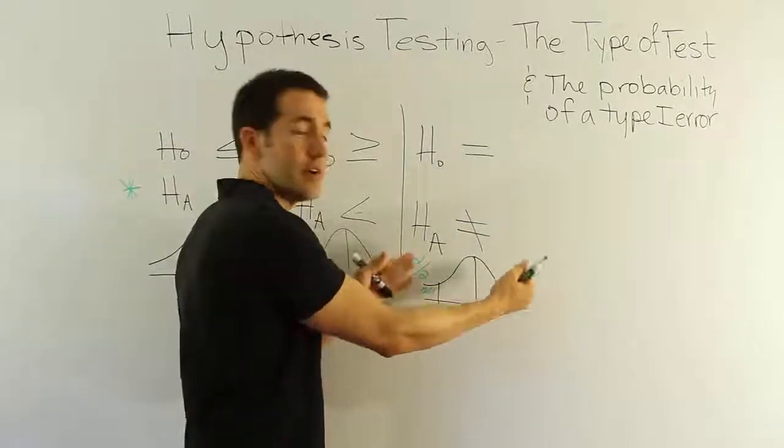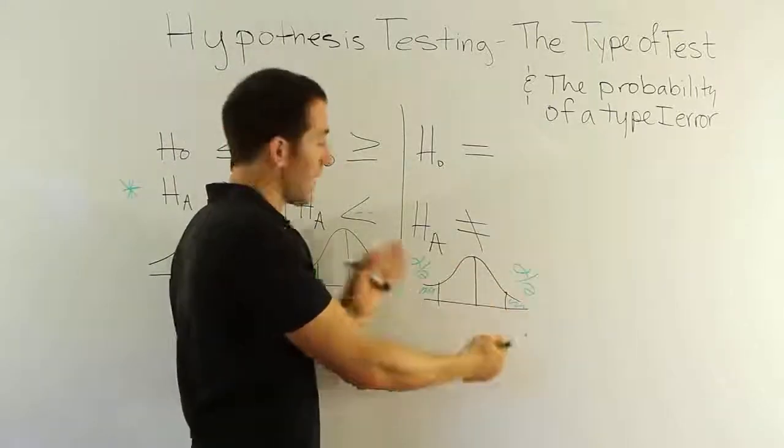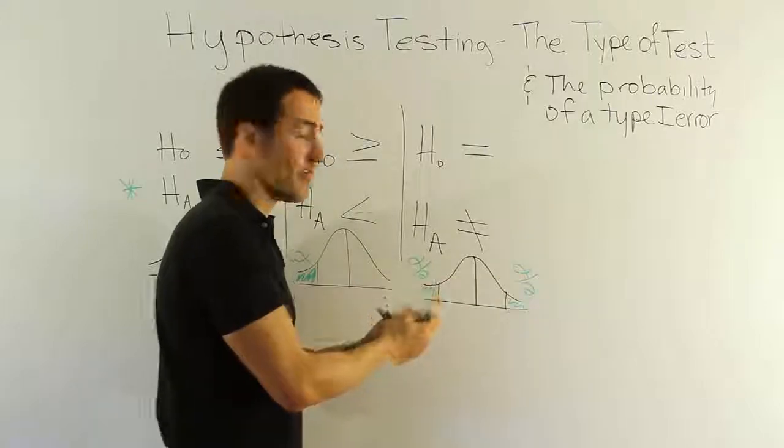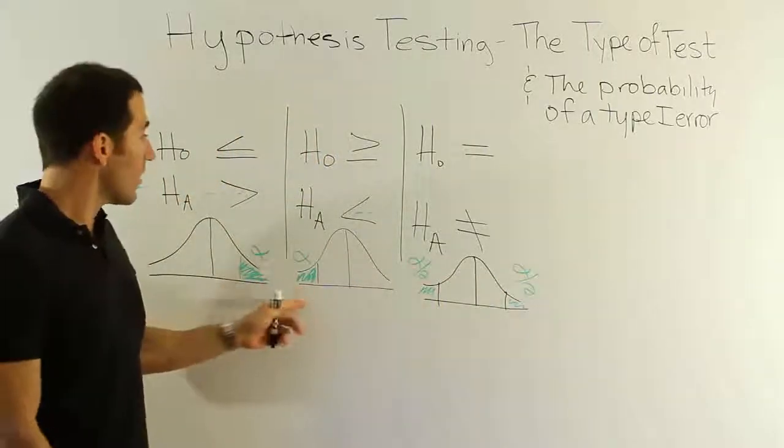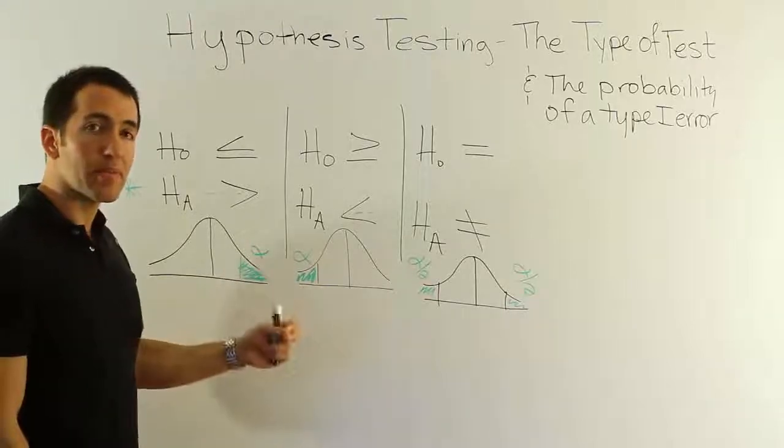But still, the overall tail area is alpha. If you add these two together, alpha divided by 2 plus alpha divided by 2, half of alpha, half of alpha, you get alpha. Here you have alpha, here you have alpha.